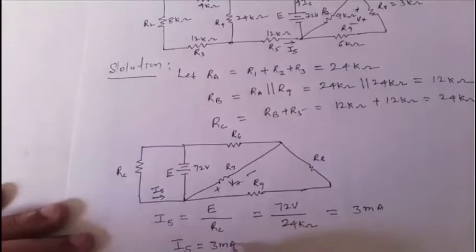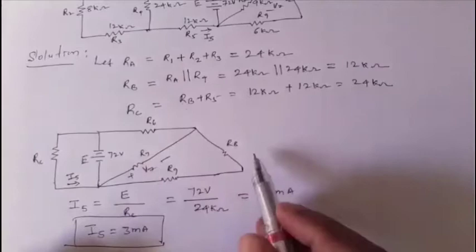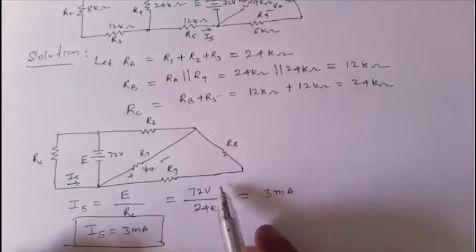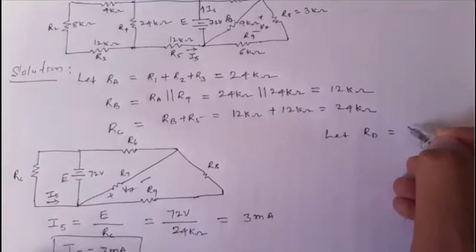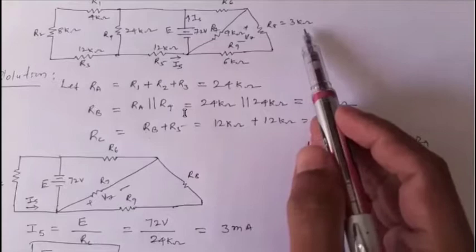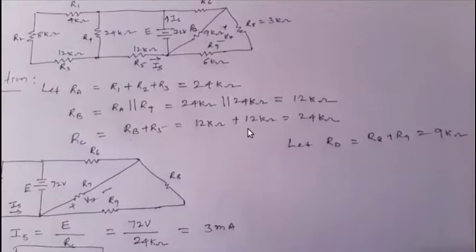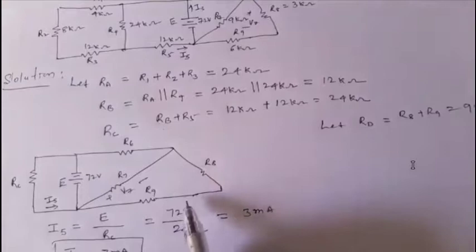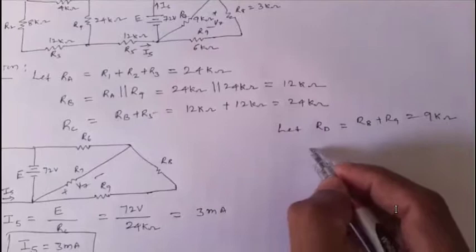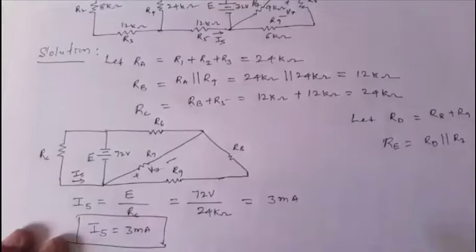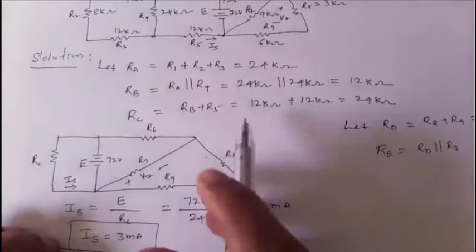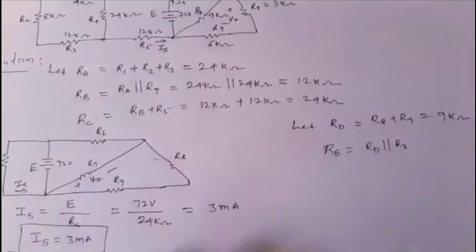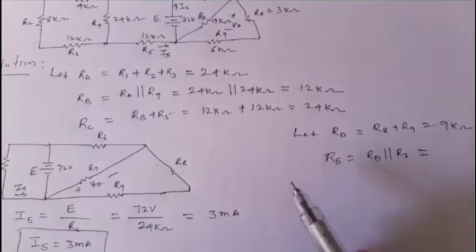Now reduce the right side. r8 and r9 are in series: let rd = r8 + r9 = 3 kΩ + 6 kΩ = 9 kΩ. This rd is in parallel with r7. Let re = rd parallel r7 = 9 kΩ parallel 9 kΩ = 4.5 kΩ.